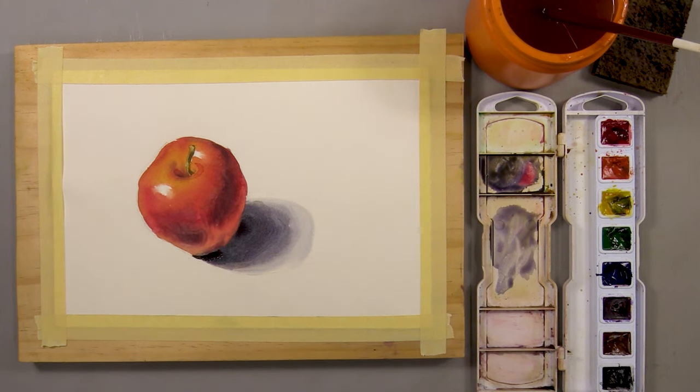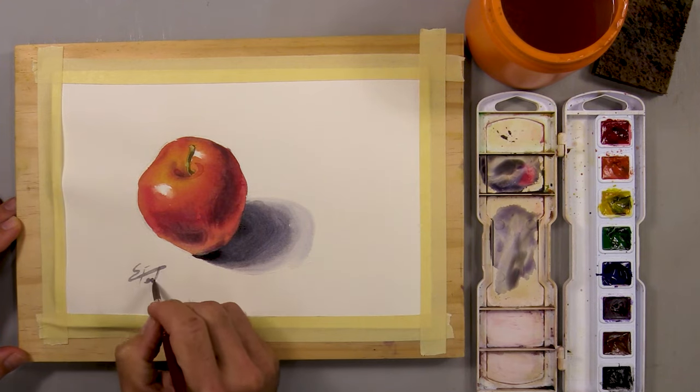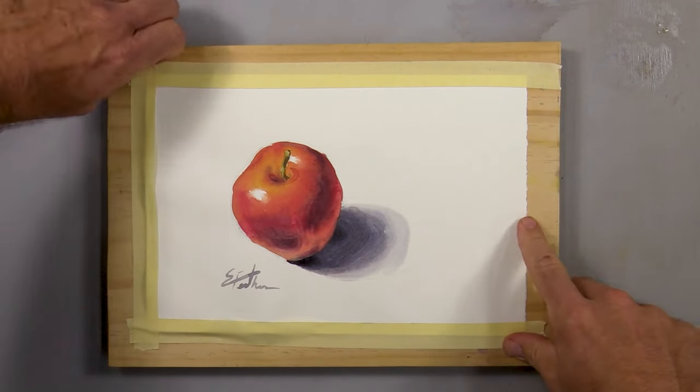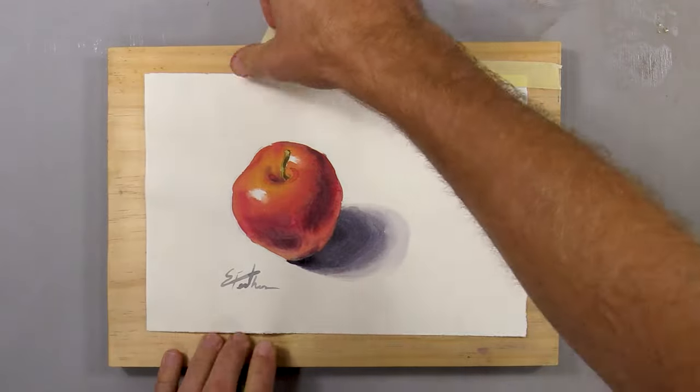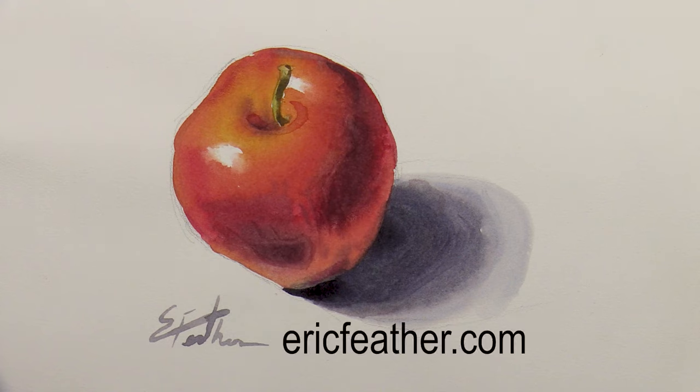Now it's completed. You can see that by using only the primary colors I was able to get convincing value and color on this object. Using only these three colors you can paint anything. Well, that's it for this lesson. I hope you enjoyed it and I hope you can join me again for the next one. Have a great day.